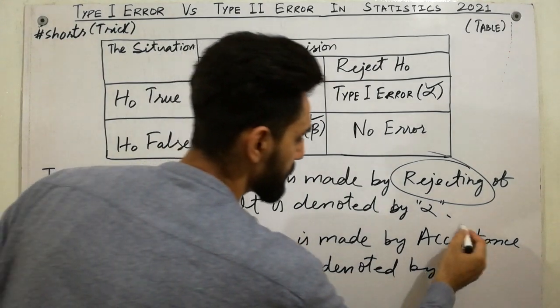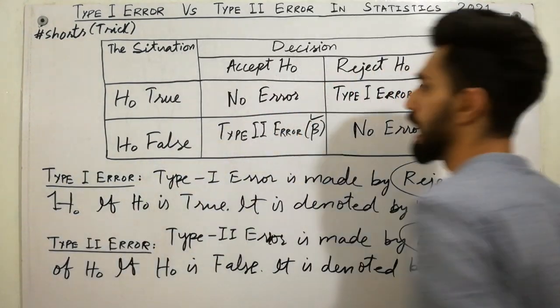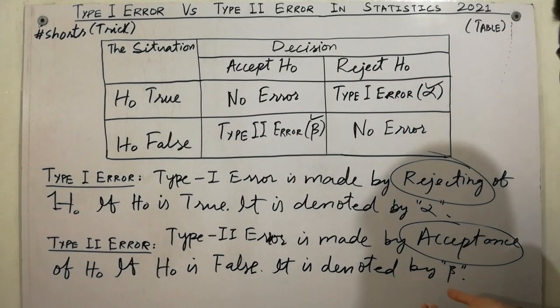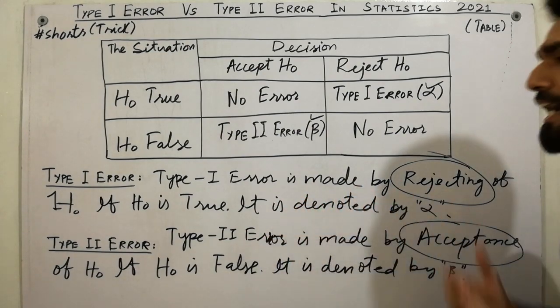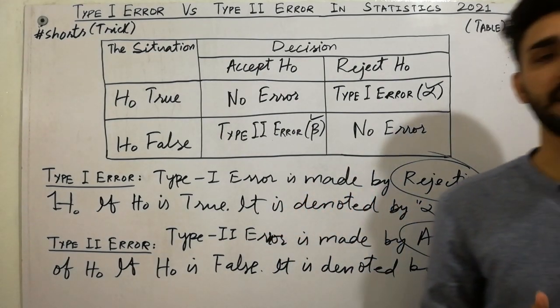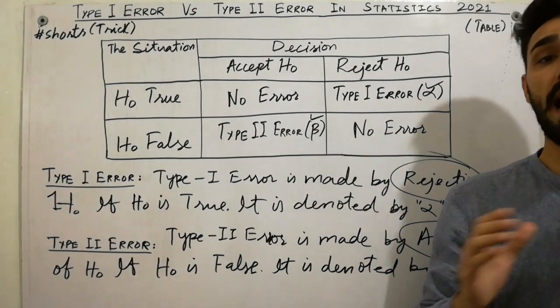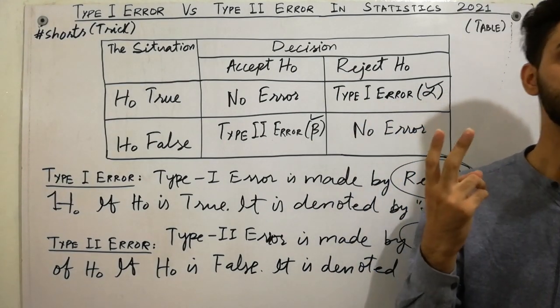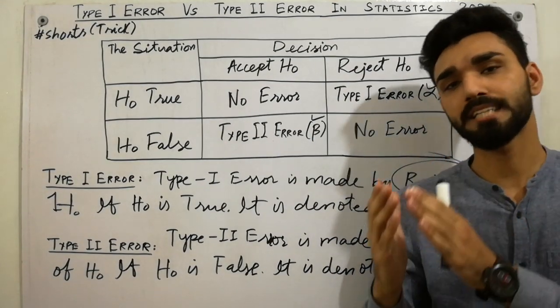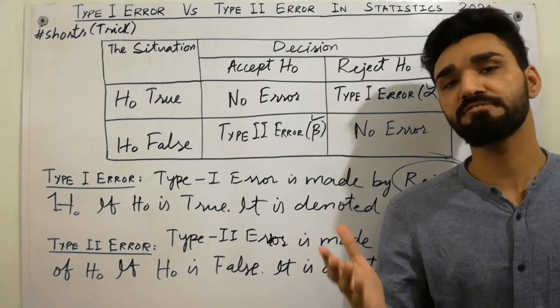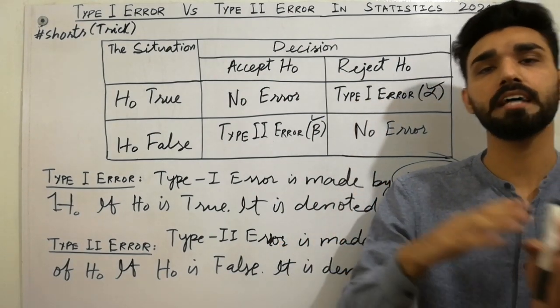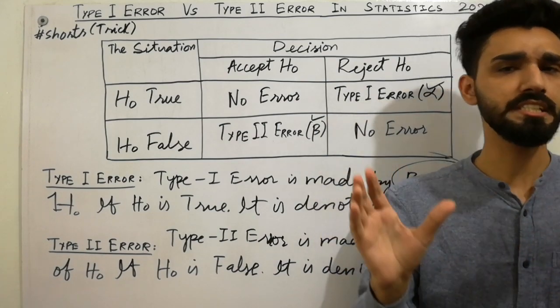And must remember the clear point: Type I error is always for rejection, must remember, and Type II error is always for acceptance. I hope that you have cleared the concept about the easiest definition of Type I error and Type II error. Also share this lecture with your classmates and friends. And I have already discussed two lectures: difference between acceptance region and rejection region, and also the difference between null hypothesis and alternative hypothesis. These lectures are in the description below the video. You can also watch that.